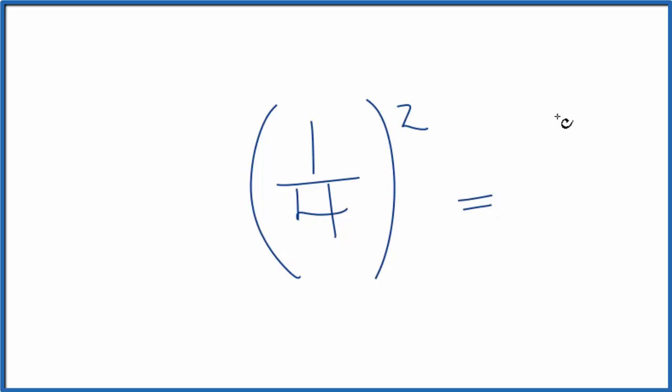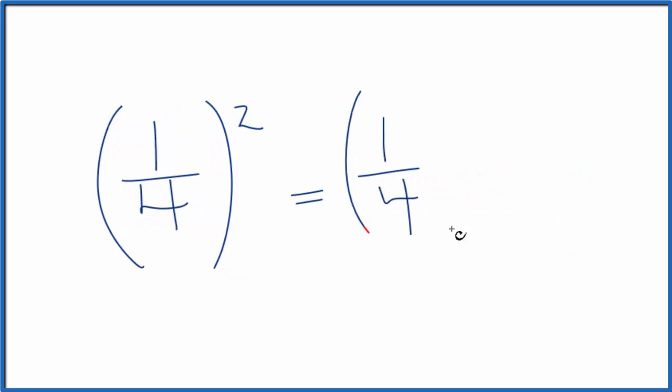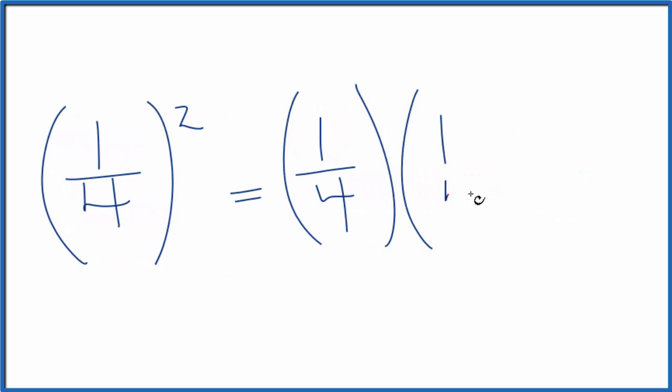One-fourth squared, that's just one over four times one over four. One times one equals one, four times four equals sixteen. So one-fourth squared is one over sixteen.